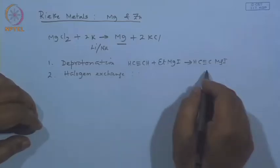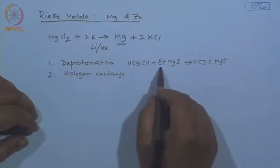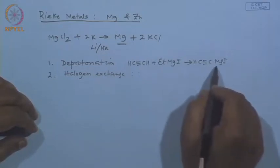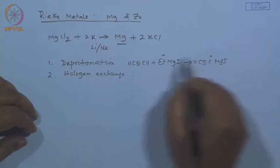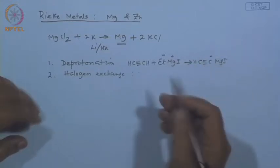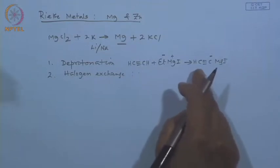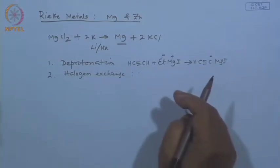That means the reaction would proceed in the forward direction. In the previous example, on your left-hand side you had ethyl magnesium iodide, and on the right-hand side, if you compare the ethyl anion and acetylene anion, which one is more stable? The stability goes to acetylene — it is less basic, less nucleophilic.